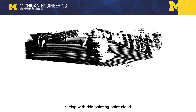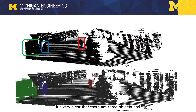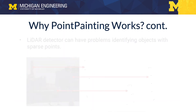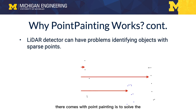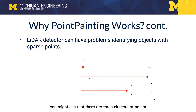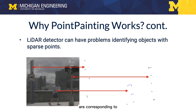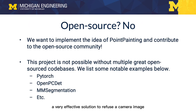However, if you are facing the painted point cloud, you can see very clearly that there are three objects, making your task of detecting them quite easy. Another benefit of Point Painting is solving the problem of sparse point classification. You might see three clusters of points that are hard to distinguish. But with the image information, it becomes clear that the middle cluster represents a pedestrian while the other two correspond to a traffic sign.